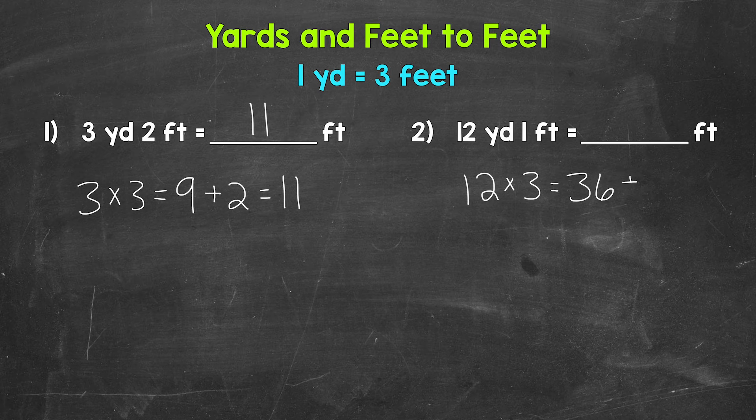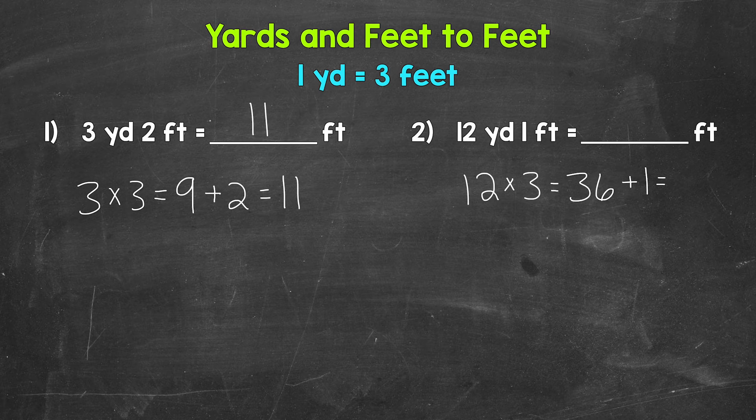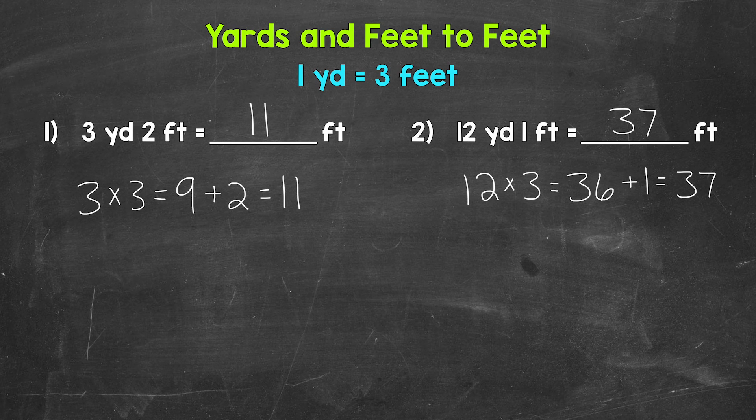Now we need to add that one foot to that. So we have thirty-six feet plus one foot. That gives us thirty-seven feet. Twelve yards one foot equals thirty-seven feet. So there you have it.